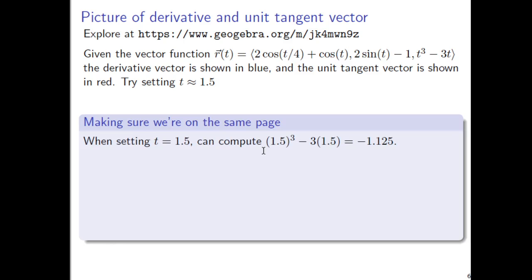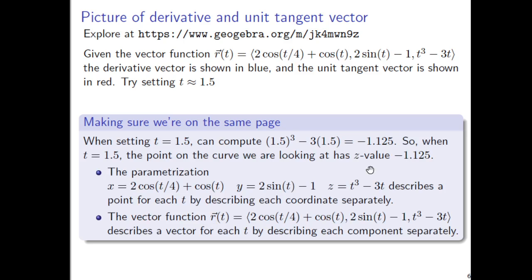Okay, so to make sure that we're understanding what's going on, by setting t to be 1.5 exactly, now in the app I could only get like 1.45, but let me just now talk about t equals 1.5 exactly. We could compute 1.5 cubed minus 3 times 1.5 equals negative 1.125. I computed that because that's just the z coordinate, just to talk about one of the coordinates. So when t is equal to 1.5, the point on the curve we're looking at has z value negative 1.125. We could have computed the x and y values as well, but those looked a little more complicated. So I just wanted to talk about the z value.